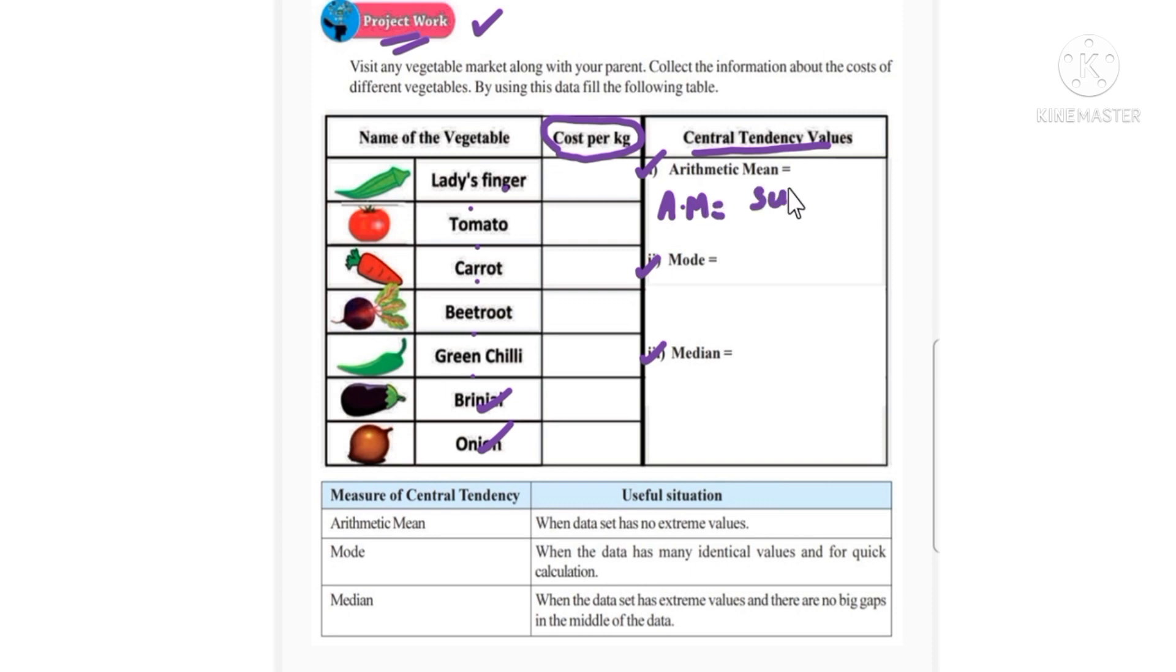Arithmetic mean is equal to sum of observations by number of observations. So the observations total - count them: 1, 2, 3, 4, 5, 6, 7. Yes, seven observations total. So by the sum divided by the denominator 7, we have to calculate arithmetic mean.